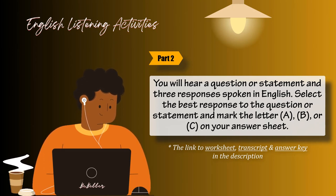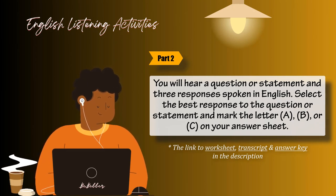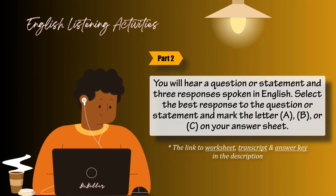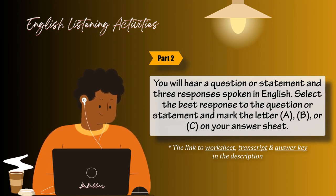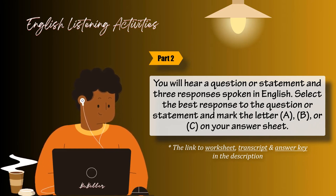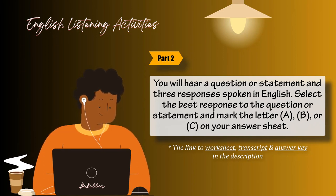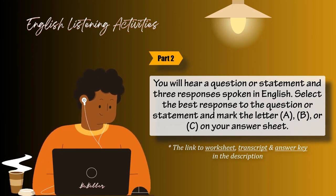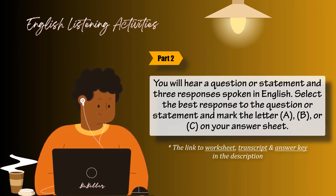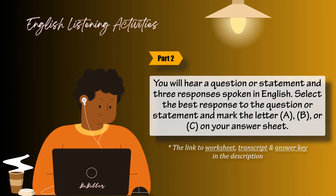Now listen to an example question. You will hear: 'Where is the meeting room?' You will also hear: A: To meet the new director. B: It's the first room on the right. C: Yes, at 2 o'clock. The best response to the question 'Where is the meeting room?' is choice B, 'It's the first room on the right,' so B is the correct answer. You should mark answer B on your answer sheet. Now let us begin Part 2 with question number 11.